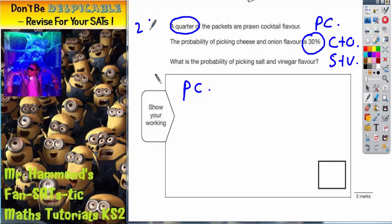A quarter is the same as 25%. So prawn cocktail is 25%. Cheese and onion, we already know from the question, is 30%. So let's see what that gives us so far. If we add those together, 5 and nothing is 5, 2 and 3 is 5.